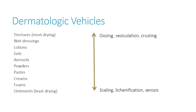Here's a good chart for thinking about how drying or moistening different vehicles are going to be. Products with alcohol — ethanol tends to be much more drying because alcohol evaporates easily, taking moisture along with it. So alcohol-based products are very drying — which could be okay for a really oozy wound. That's where you see tinctures and wet dressings, which are more drying. As you go down to gels and lotions, there's more water-based component. Ointments tend to be the least drying — better suited for scaly, dry skin.